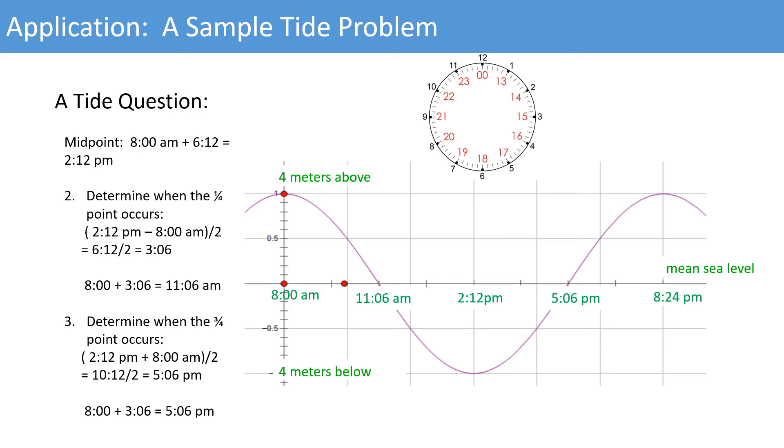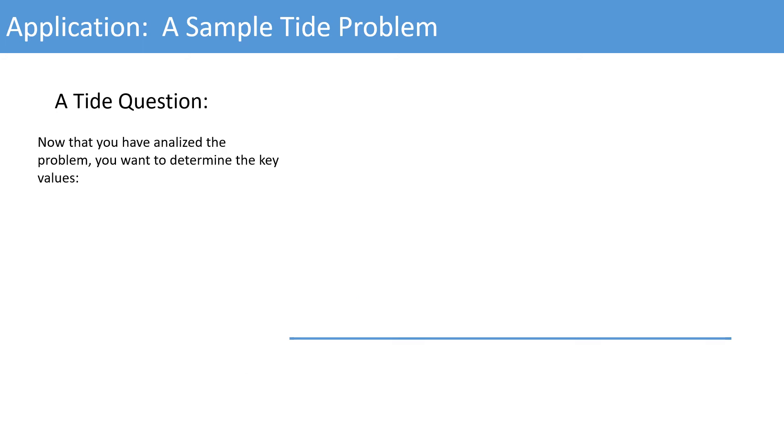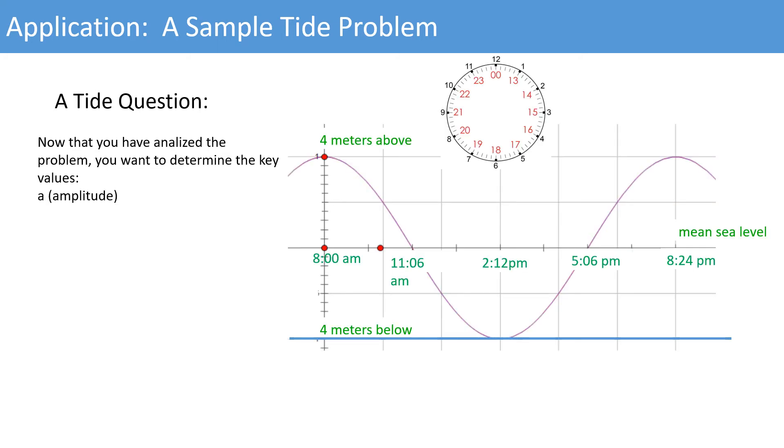Now that you have analyzed the problem and visualized it, let's determine the key values necessary to create the trigonometric equation. A represents the amplitude, the distance from the midpoint to the high point. C is the axis of curve, the horizontal line through the midpoint. K is calculated using 2π divided by the period. And D is the phase shift.